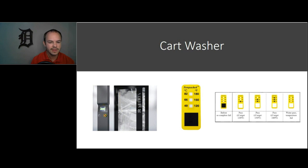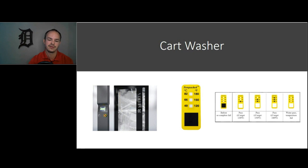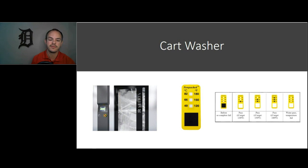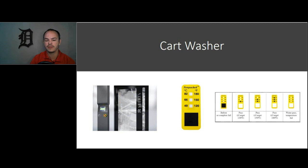In an ASC setting, you may or may not have a cart washer. If you do, you should be checking to make sure it's working just like an instrument washer — it too can fail. A simple test shows that water impingement is reaching the hard-to-reach areas within your case carts. The little black square on the test will turn white if water is reaching it. It can also show you what temperature your washer water reached during the cycle — for low-level thermal disinfection, you want that 180-degree indicator to change accordingly.